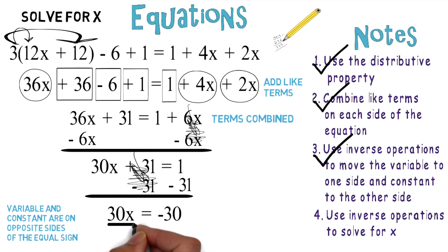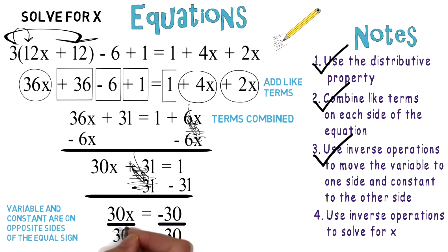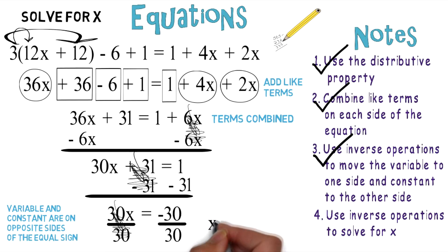We're going to divide both sides by 30. Whatever we do to one side, we do to the other. The 30s cancel each other out, and you wind up with x = -1.